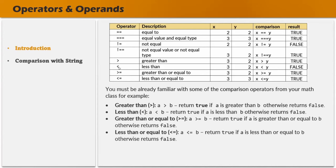We also have the less than operator. When we use it on x and y where x is 3 and y is 2, 3 is not less than 2 — it is greater than 2. So the less than operator will return false. Every comparison operator is going to return a boolean value. Any comparison operator will always return true or false.